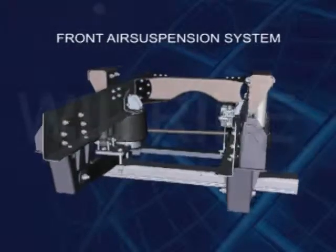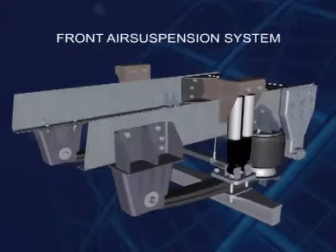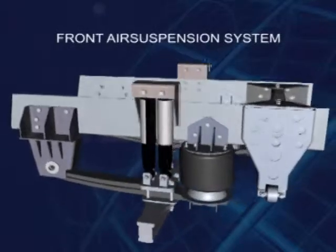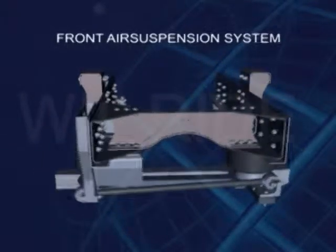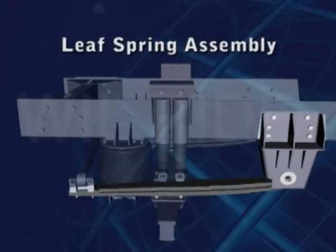Front Air Suspension System. Front Air Suspension System is a simple and robust system having following components. Leaf Spring Assembly, also called an Air Linker.